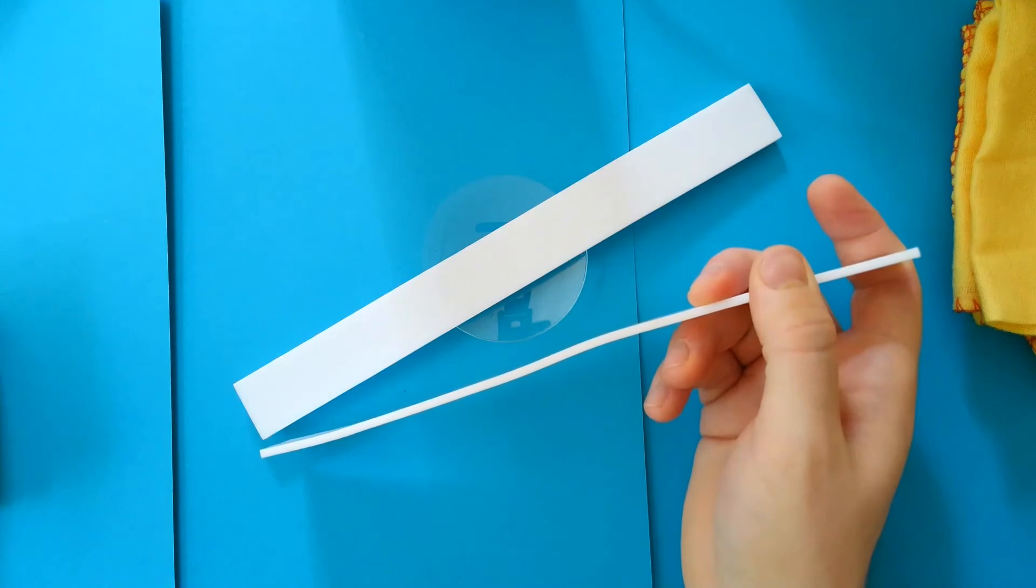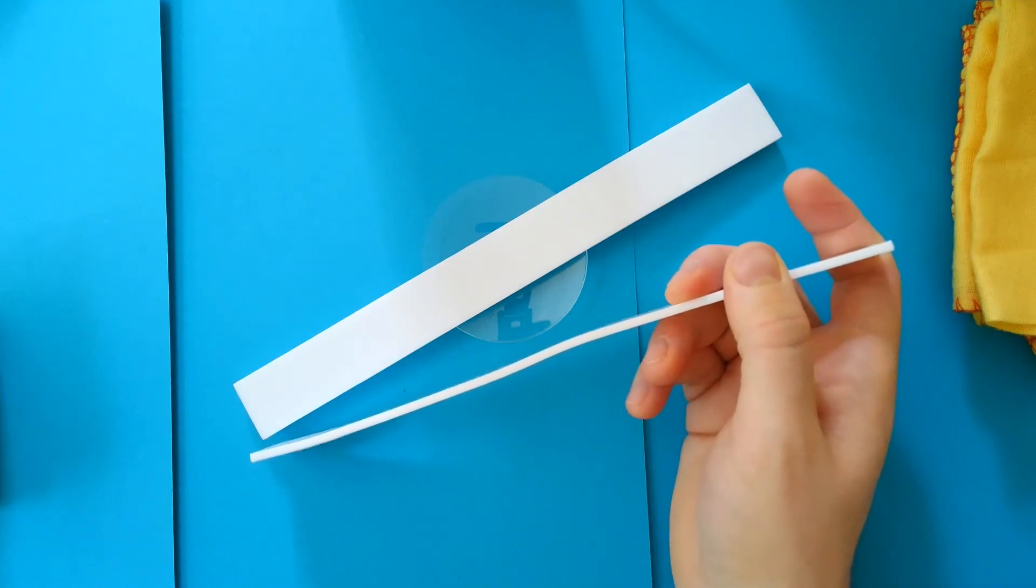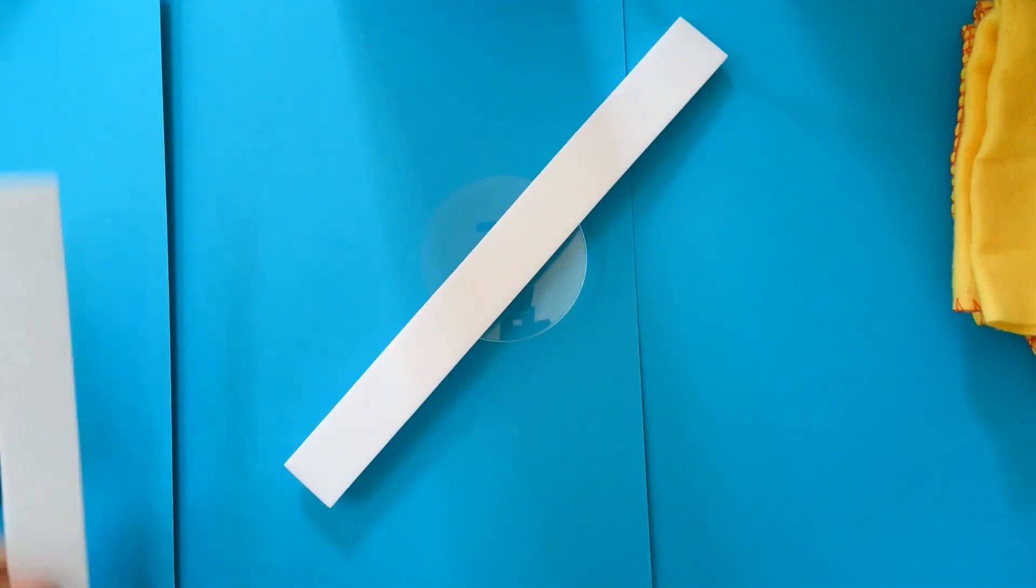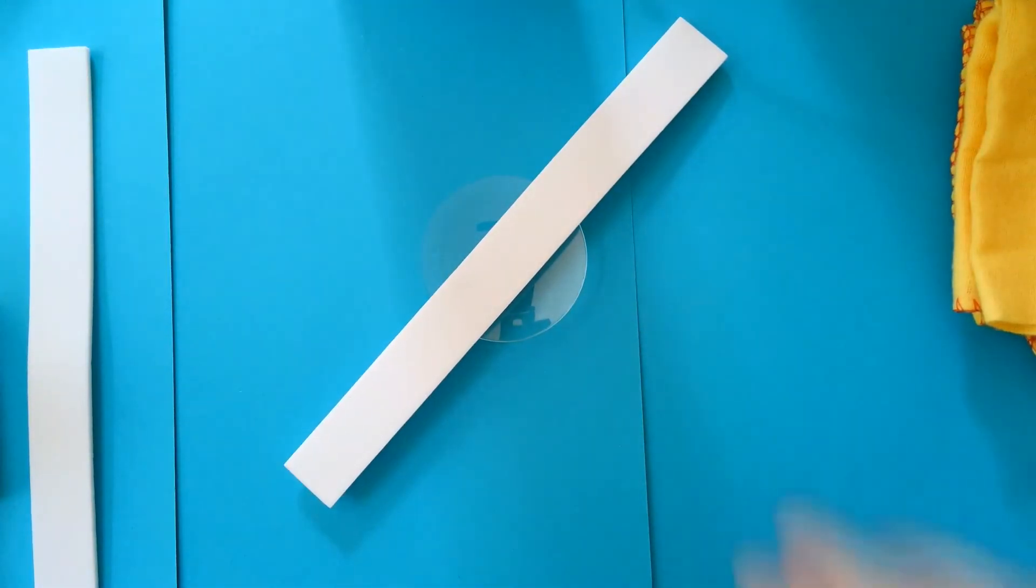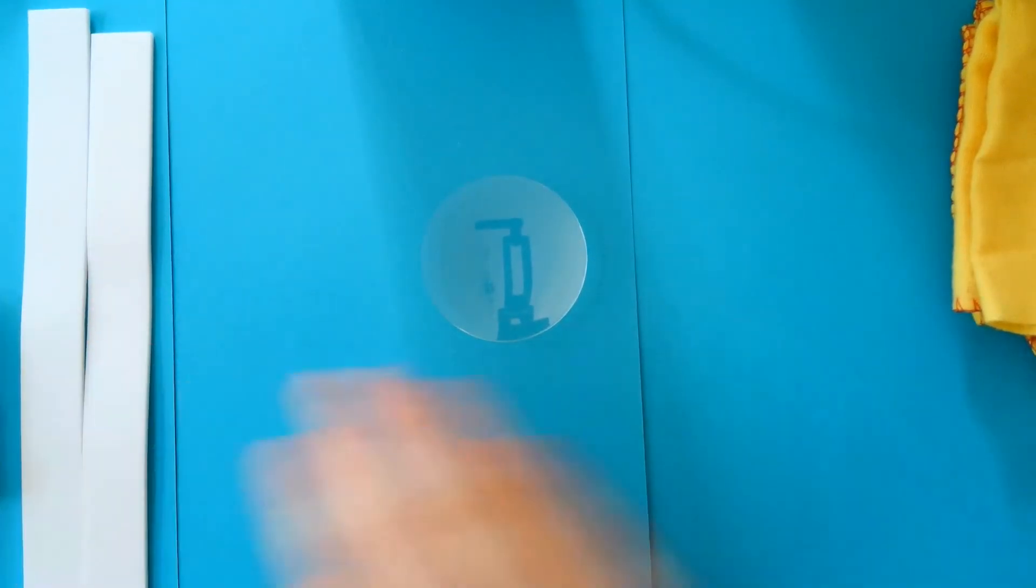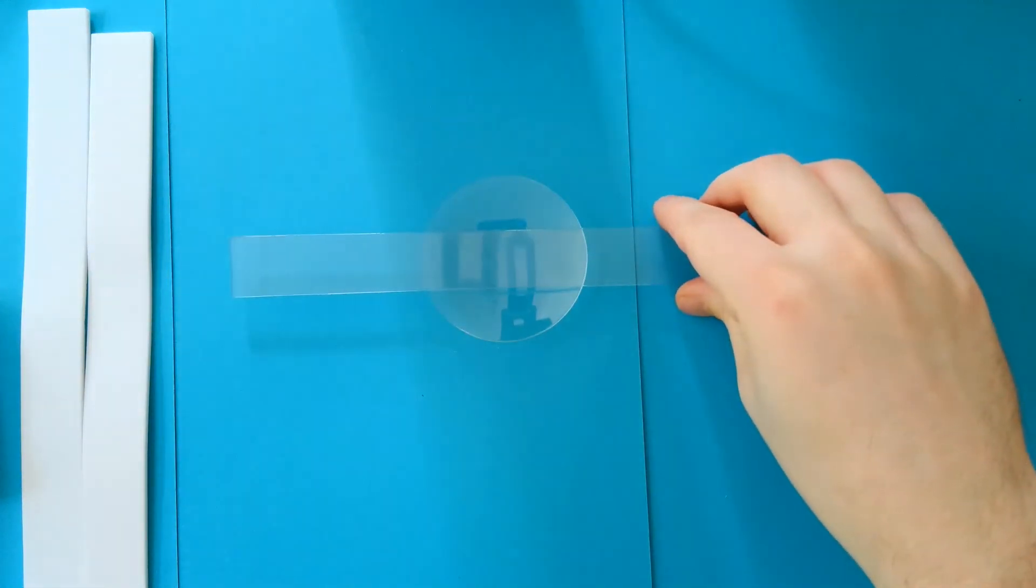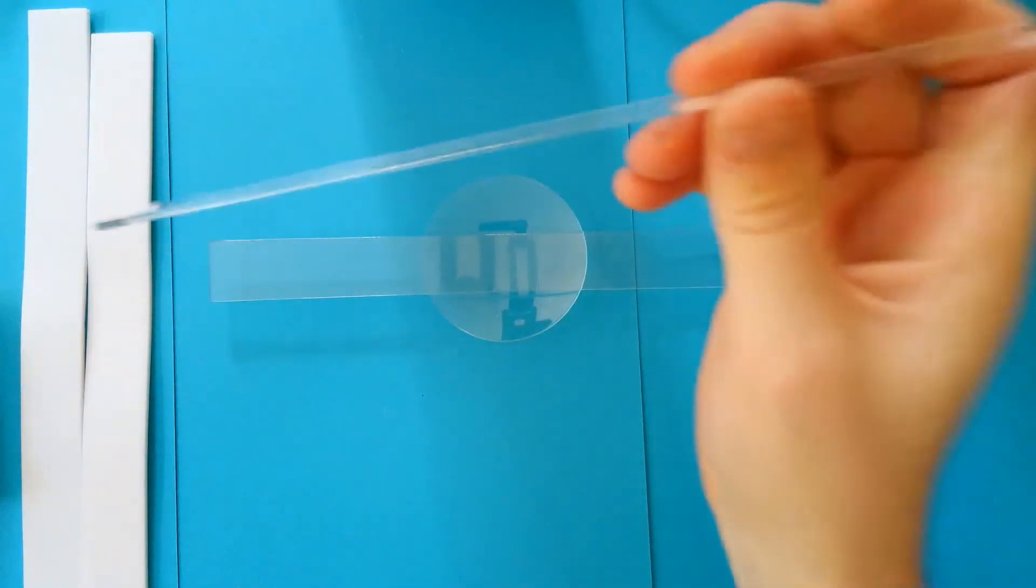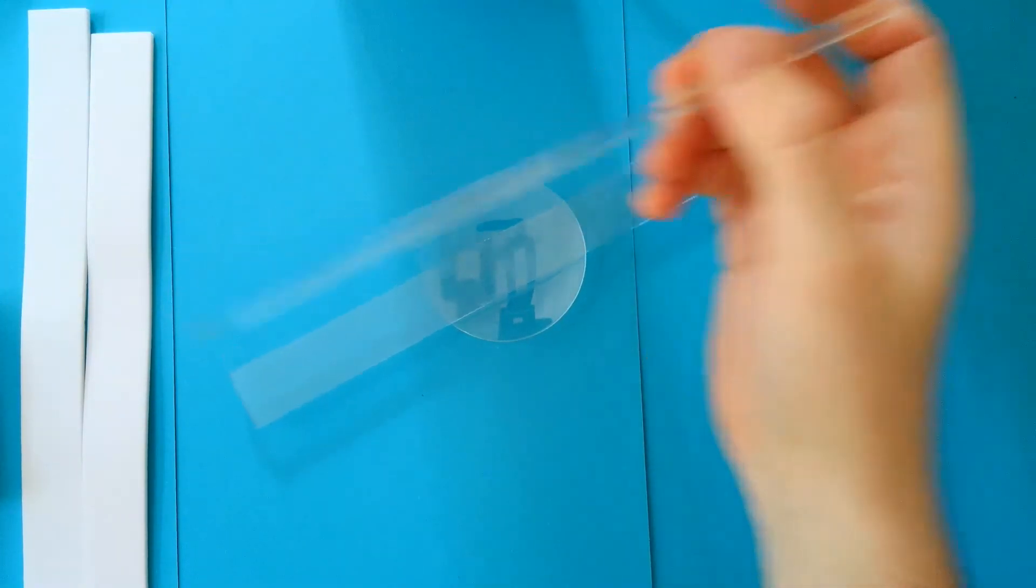That also works with the acetate rods. If I take this off now, I'll do the same thing with the acetate rods. So I charge them up, put this on here, being very careful not to let the charged end touch the table. I charge up another acetate rod, and there we go, repulsion.